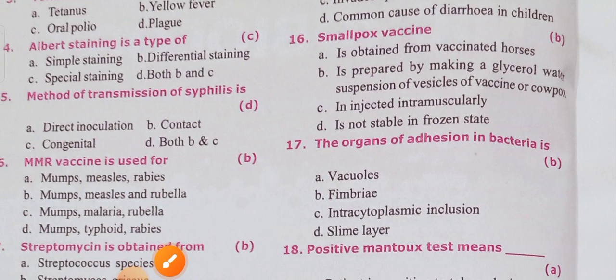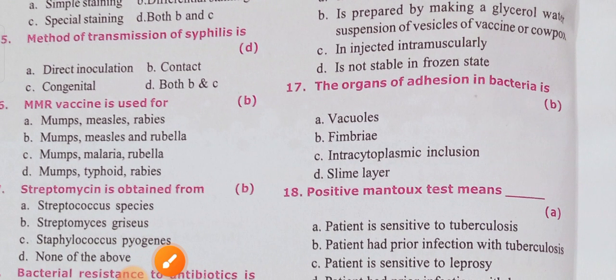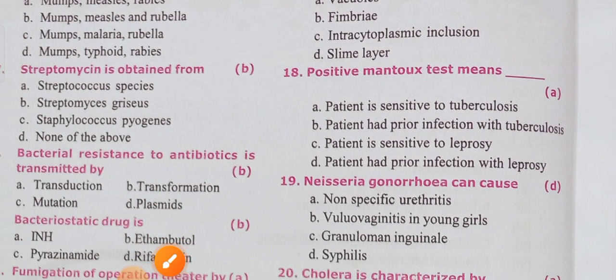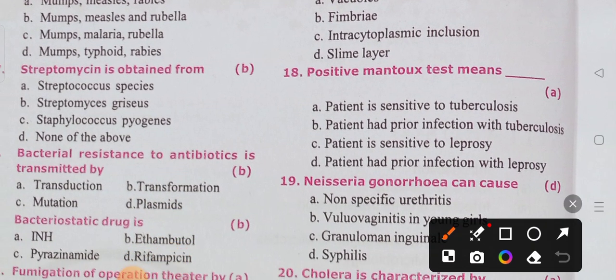Smallpox vaccine is prepared by making a glycerol-water suspension of the vesicles of the vaccinia or cowpox virus — option B is the correct answer. The organs of adhesion in bacteria — organs that help bacteria attach — are the fimbriae.